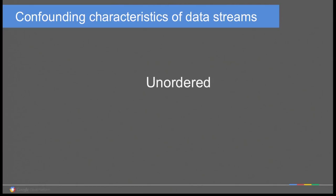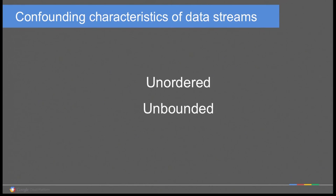Streams are hard. For one thing, they're unordered — the order in which events arrive doesn't have to match the order in which they happened. You can have different streams converging via very different paths. Even within one stream, events can be reordered, so you have to deal with events arriving in any order. Streams are also obviously unbounded, so you cannot wait until you have all your data. At some point you have to start processing — so how do you decide when, and what happens when delayed events arrive unexpectedly?